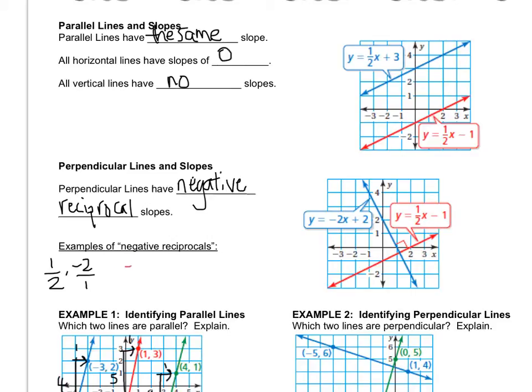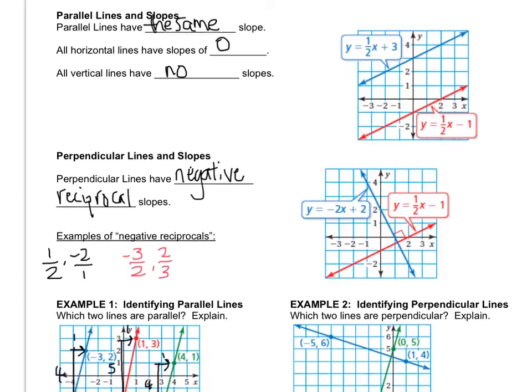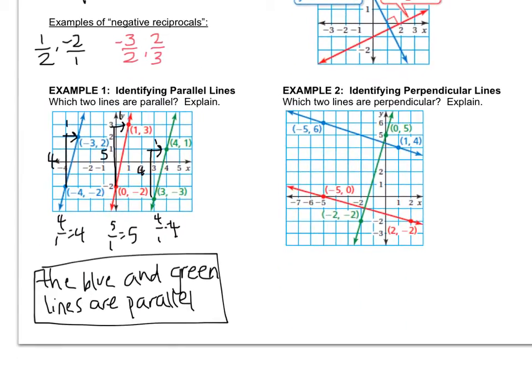For example, if you have a slope of negative three halves, its negative reciprocal is positive two thirds. So you're changing the sign and doing the reciprocal. As the word would imply.